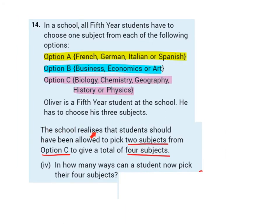The school realizes that students should have been allowed to pick two subjects from option C to give a total of four subjects. So option C has biology, chemistry, geography, history, or physics. Originally they could just choose one subject from option C, but now they can choose two. They'll still have one subject from option A, one from option B, and now two subjects from option C — making a total of four subjects altogether.